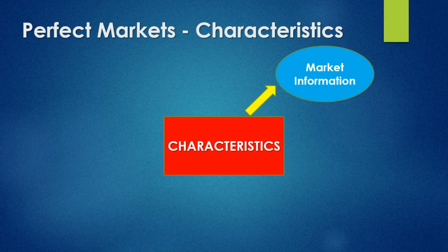We continue with more characteristics and look at market information. Market information in a perfect market is full. This means that both buyers and sellers have full knowledge of what is occurring within the market.